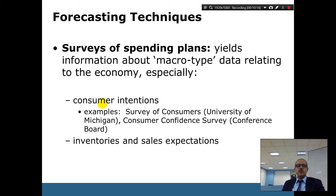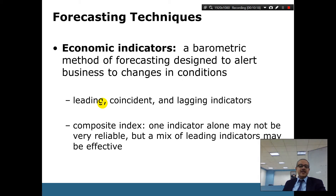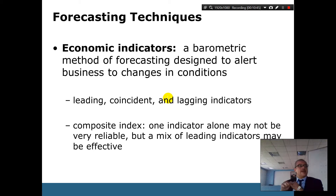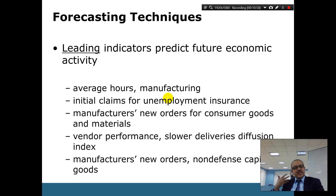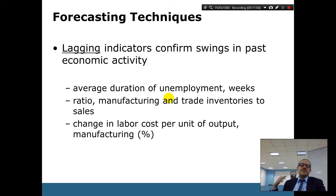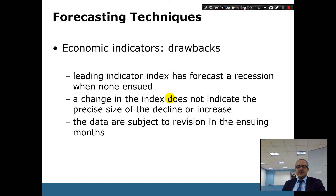Economic indicators use a barometric method of forecasting designed to alert businesses to changes in conditions. A composite index is more reliable than a single indicator — combining metrics like employment rates, consumer price index, exchange rates, and oil prices. Leading indicators point to the future; coincident indicators reflect what is happening now; lagging indicators confirm what has already happened.